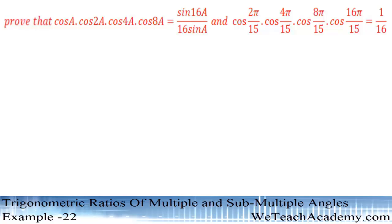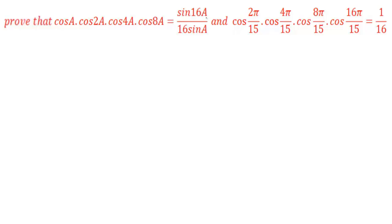Hey guys, welcome to VTCH Academy. In this presentation we are going to discuss an example: prove that cos a · cos 2a · cos 4a · cos 8a = sin 16a / (16 sin a). And also prove that cos(2π/15) · cos(4π/15) · cos(8π/15) · cos(16π/15) = 1/16.